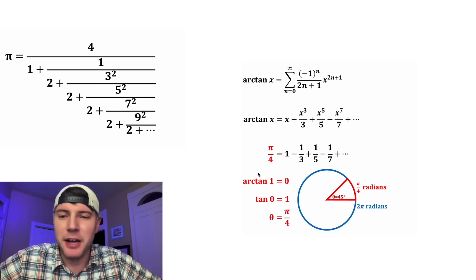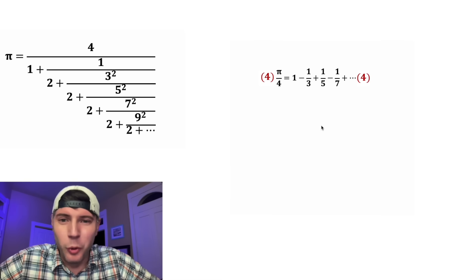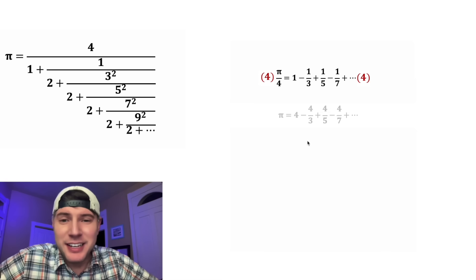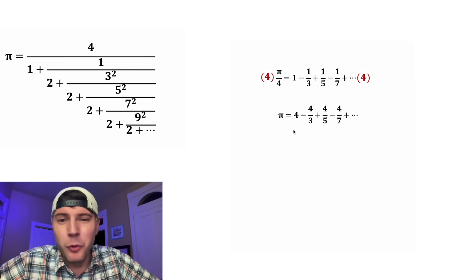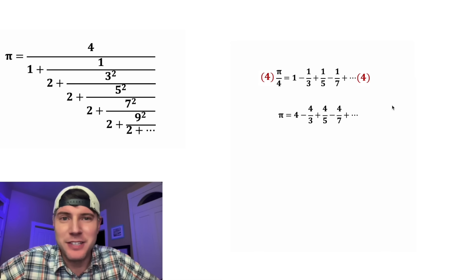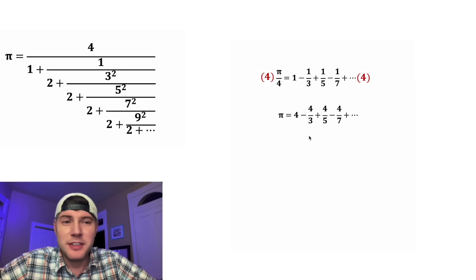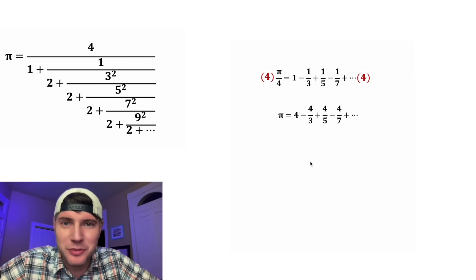So we can change this into pi over 4. Now from here, if we multiply both sides by 4, that gives us a really neat sum for pi. Pi is equal to 4 minus 4 thirds plus 4 fifths minus 4 sevenths plus 4 ninths minus 4 elevenths, and so on. If you were to add up all these forever, it would equal exactly pi. This sum is already really cool, but I want to see how this changes into that continuous fraction from before.